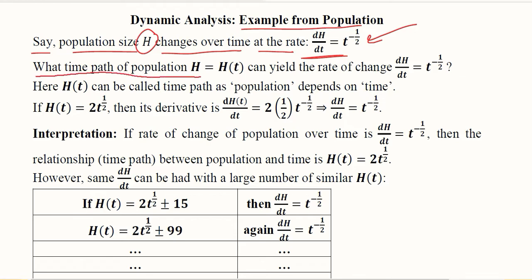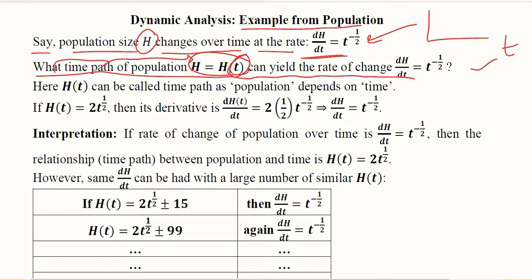What time path can population h yield given these rate of changes? Time path is simply the situation where a dependent variable depends on time. You can see that population is depending on time, so it is the time path of population. Diagrammatically, if this is time on the horizontal axis and this is population on the vertical axis, this graph will be known as the time path of population.